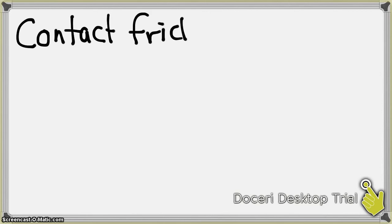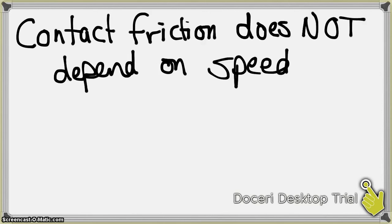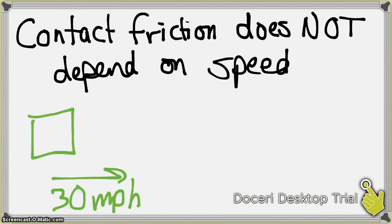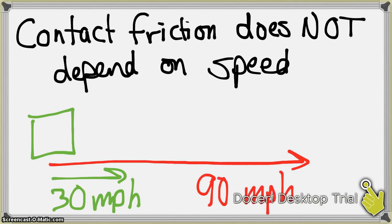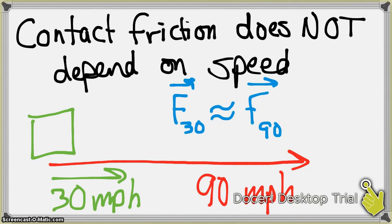Now, here is where friction starts to get a little more complicated. When you have friction between two surfaces — let's call it contact friction — for example, between a gigantic concrete block and a smooth wooden floor, contact friction does not depend on the speed. You push that block along at 30 miles an hour and accelerate up to 90 miles an hour, the amount of friction is actually really not going to change all that much. We know from experiments that the friction at 30 miles an hour and at 90 miles an hour is about the same.